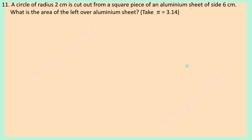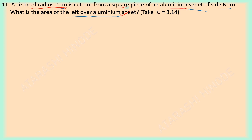The question is: a circle of radius 2 cm is cut out from a square piece of an aluminium sheet of side 6 cm. What is the area of the leftover aluminium sheet? We have to find the area of the leftover aluminium sheet — that is, when we cut off a circle of radius 2 cm from an aluminium sheet which is square in shape and its side length is 6 cm.